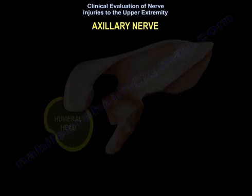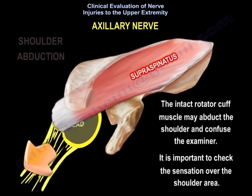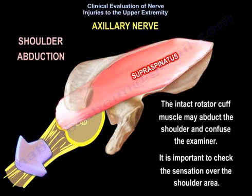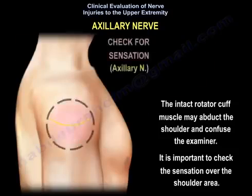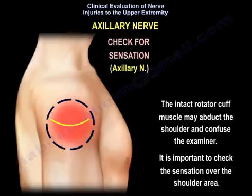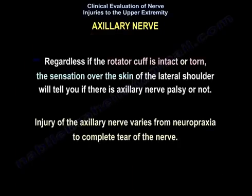There is another scenario where the intact rotator cuff muscle may abduct the shoulder and confuse the examiner. It is important to check sensation over the shoulder area. Regardless of whether the rotator cuff is intact or torn, sensation over the skin of the lateral shoulder will tell you if there is an axillary nerve palsy or not.